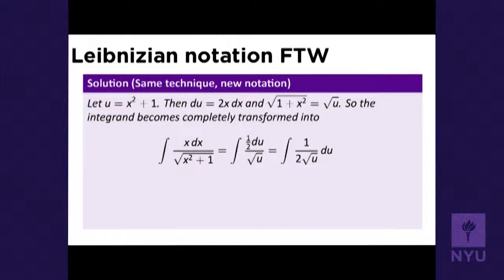Now the complicated piece √(1 + x²) can be written as √u, which is simpler. The whole integral can be rewritten in terms of u and du. The numerator is x dx. Since 2x dx = du, we have x dx = 1/2 du. Constants can be pulled outside the integral. The denominator becomes √u. So the integrand is now 1 over 2√u, and the variable of integration is u, not x. I've transformed the complicated x-and-dx integral into a much simpler u-and-du integral.